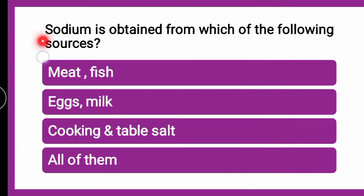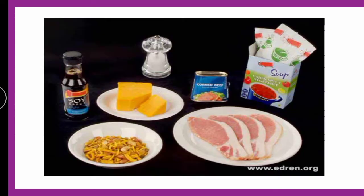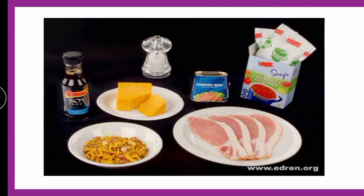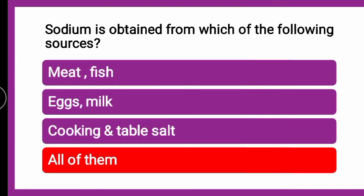Next question: Sodium is obtained from which of the following sources? Whether it is obtained from meat, fish, egg, milk, cooking and table salt, or all of them? Sodium is very commonly known to be present in salt. It is also found in meat, fish, eggs, milk, table salt, and cooking salt. So the correct answer is all of them — sodium is obtained from all these sources.